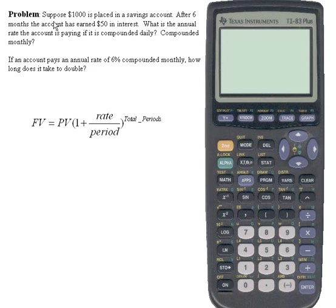So let's take a look at the problem here. Suppose we have $1,000 in a savings account. And after six months, it's earned $50. We know it's compounding daily and we want to know what the annual rate is.